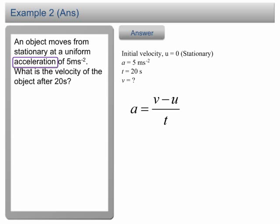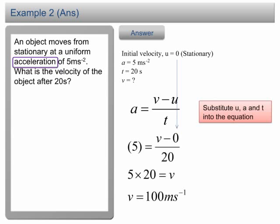Write down the equation a equals v minus u over t. Substitute u, a, and t into the equation. Solve the equation, we get v equals 100 meter per second. These two examples show how we solve a motion problem by using the equation a equals v minus u over t.